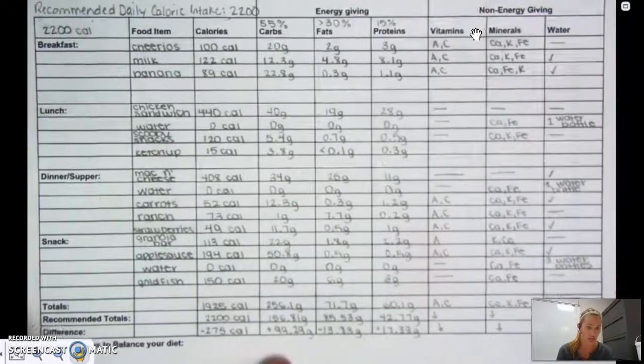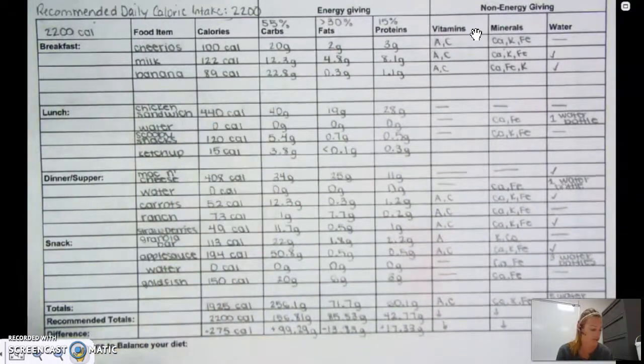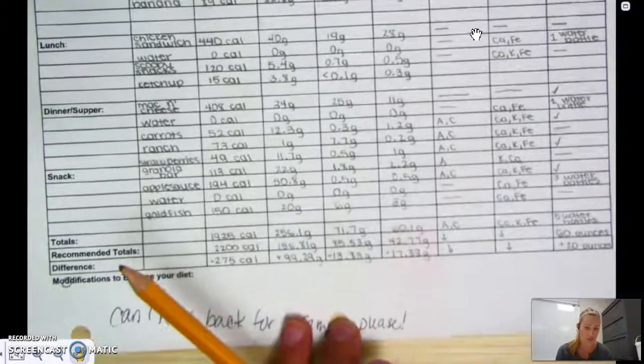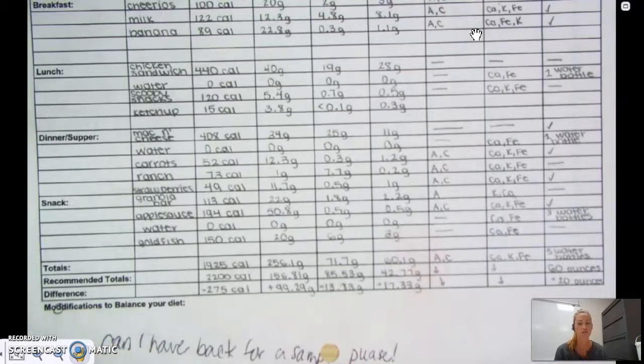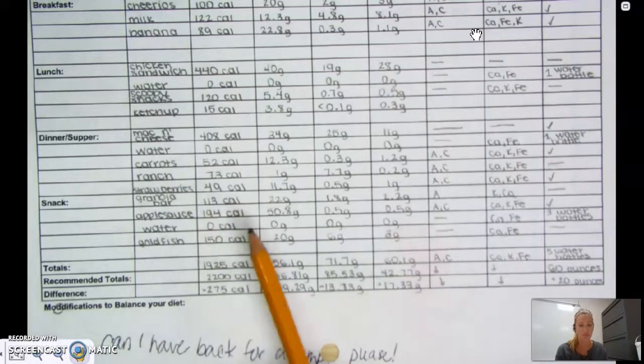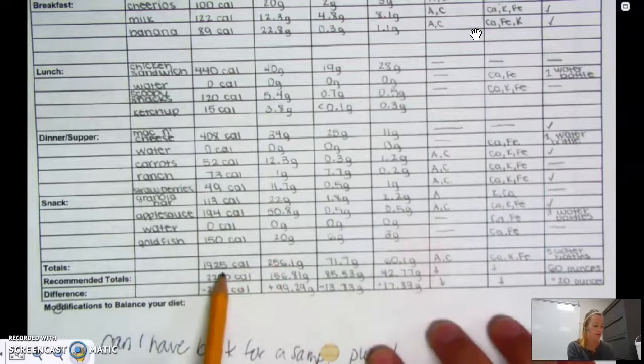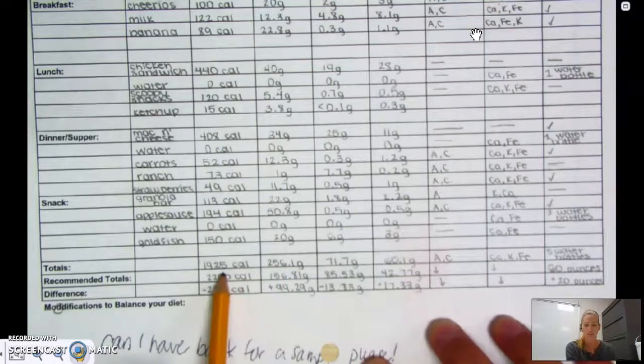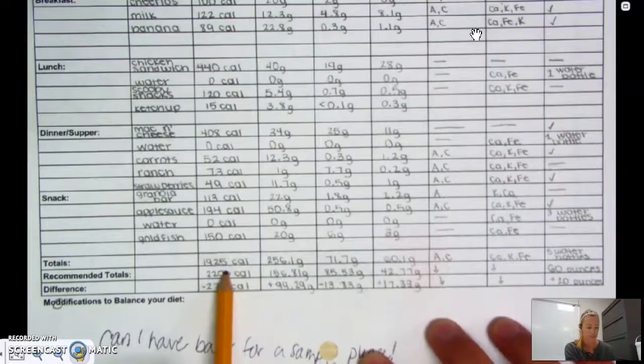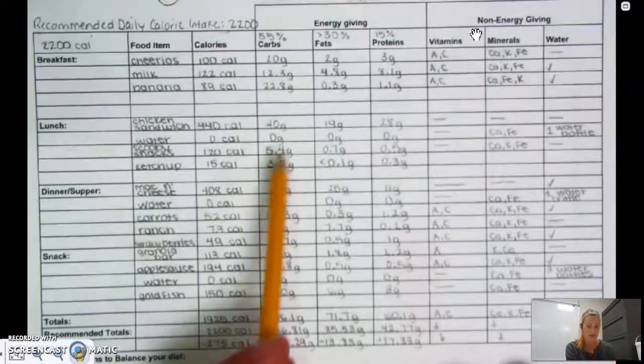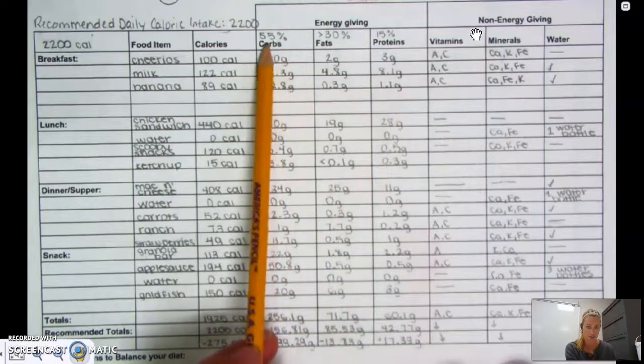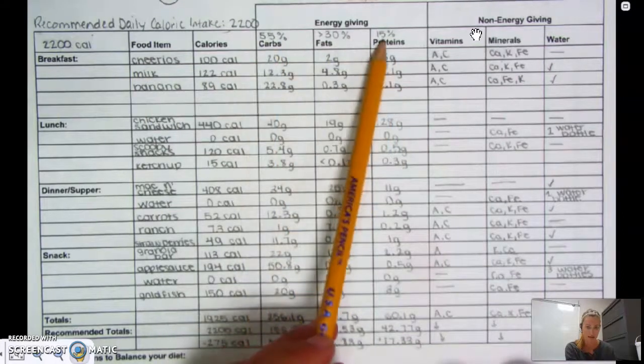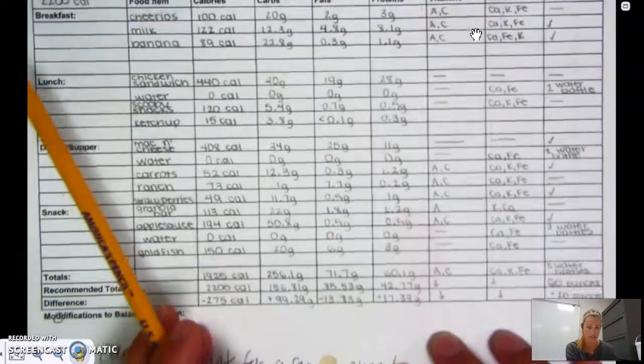Once you get all of your items recorded on your sheet, you can look up all the information. Then down at the bottom, you're going to do some totaling. This is how you are going to figure out if what you have consumed in your diet yesterday meets those requirements of the amount of carbs that you're supposed to have, the amount of fats that you're supposed to have, and the amount of proteins. So you can just see at the top, she wrote hers in for her. You can go back and refer back to your notes if you need to on that.